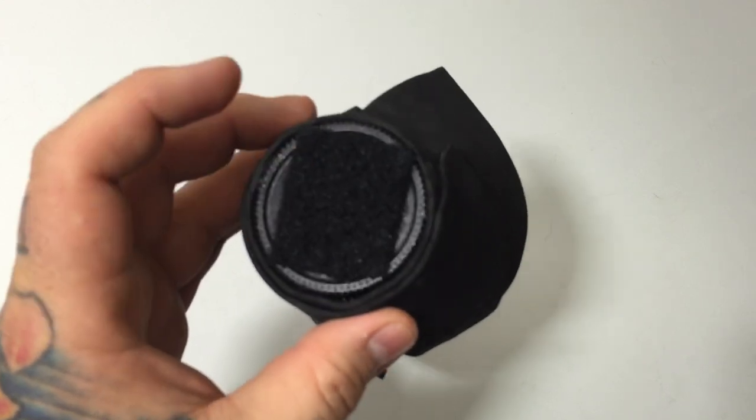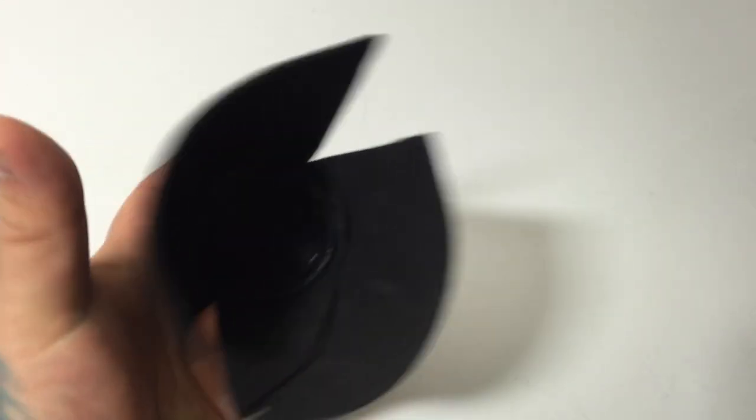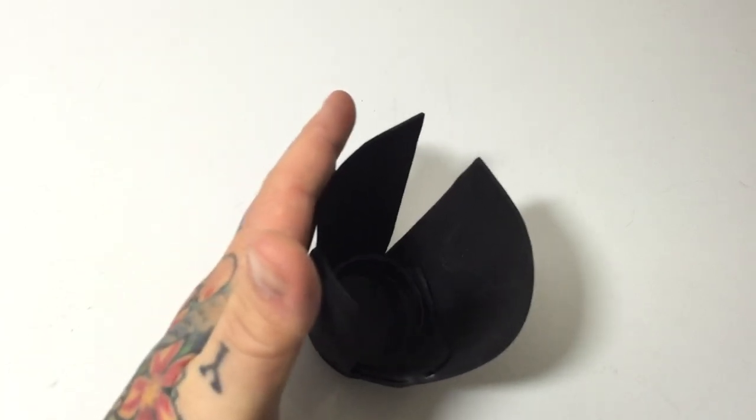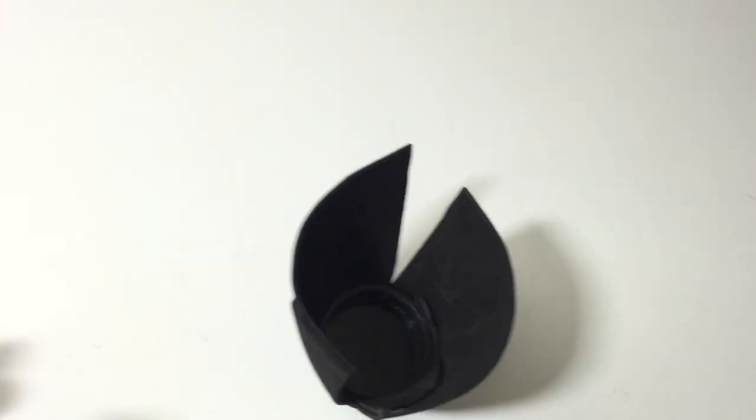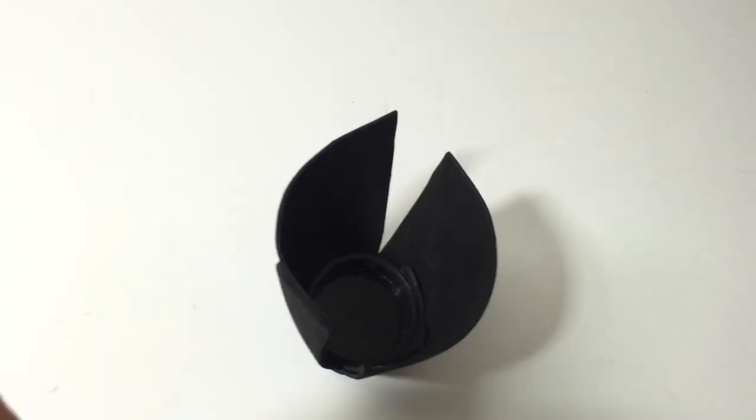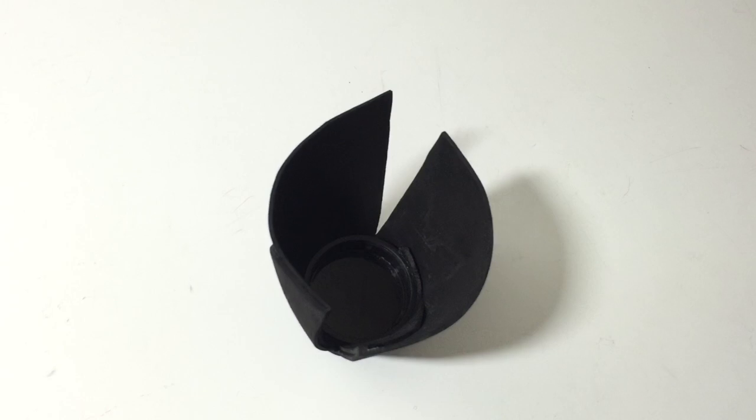So you just stick some industrial Velcro on the bottom of your camera bag and then you drop your lens in. You cinch up your divider inside your camera bag against this and that way you can not worry about rear lens caps and you can do really fast lens changes when you're out in the field.